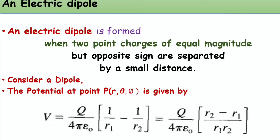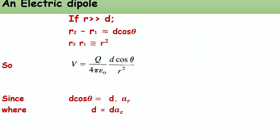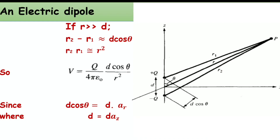We need to find the potential at point P of (r, θ, φ). As per the potential concept discussed in the previous topic, V = q / (4πε₀) × (1/r1 − 1/r2), which can be rewritten as q / (4πε₀) × (r2 − r1) / (r1·r2). Now, if r is far greater than d — where d is the distance between the positive and negative charges — then r2 − r1 is approximately equal to d cos θ, and r1·r2 is approximately equal to r².